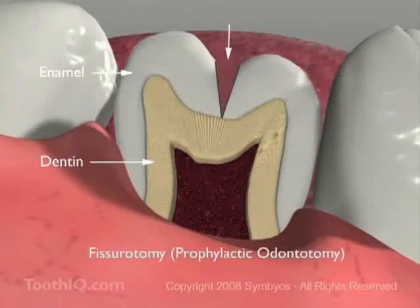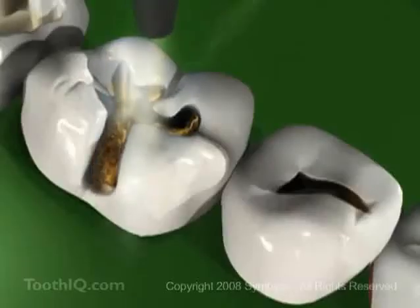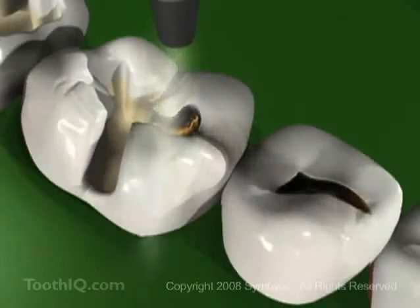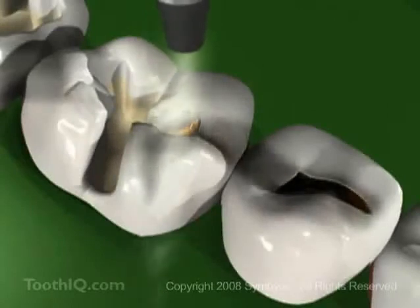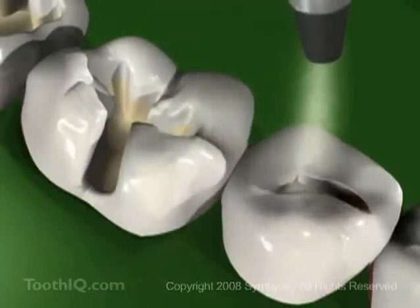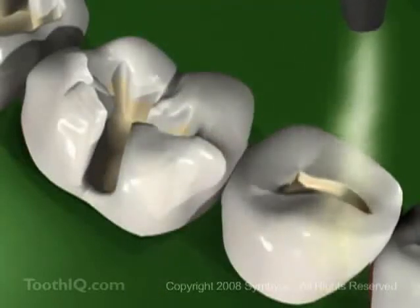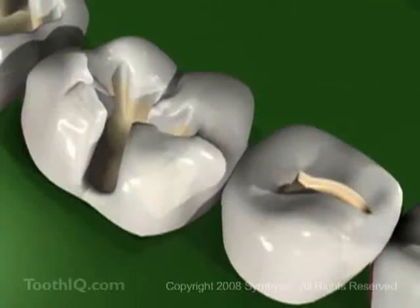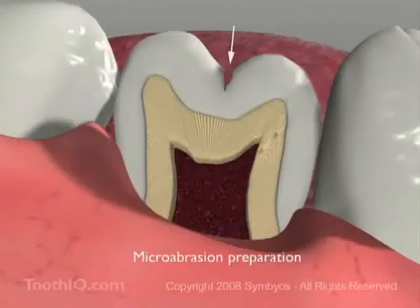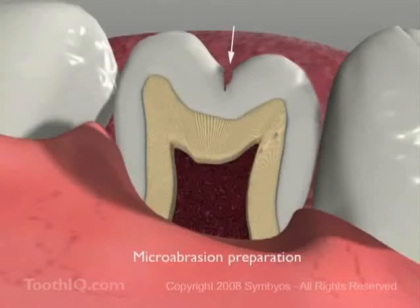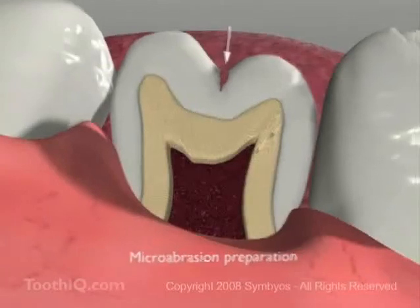The grooves can also be cleaned out less invasively with a microabrasion handpiece, which sprays a stream of abrasive particles deep into the pits and fissures to remove plaque bacteria and roughen the enamel surface. Since microabrasion doesn't completely eliminate the deep, narrow crevices, it is usually followed by placement of a dental sealant. If the preparation of the groove extends into the dentin layer of the tooth, a filling is placed instead.